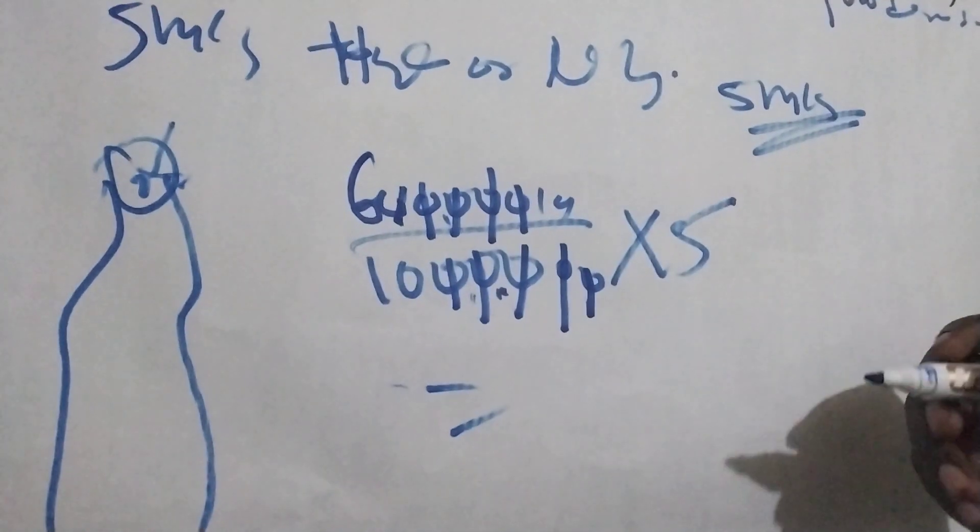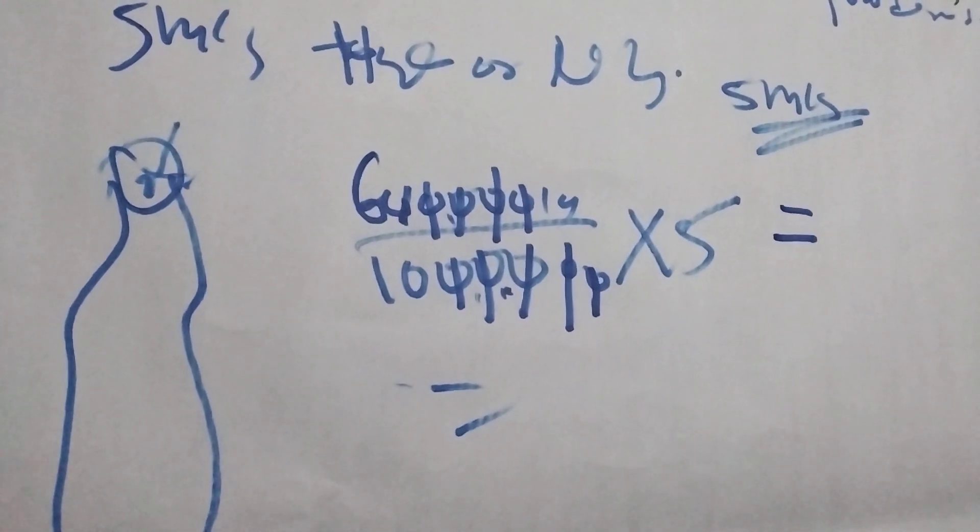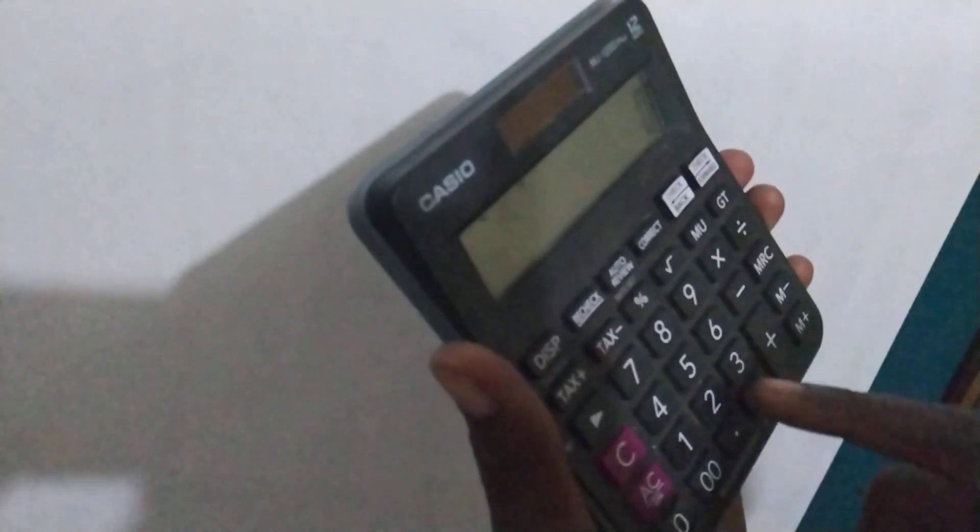Let's get the calculator, let me not make an error. So six times five divided by ten.